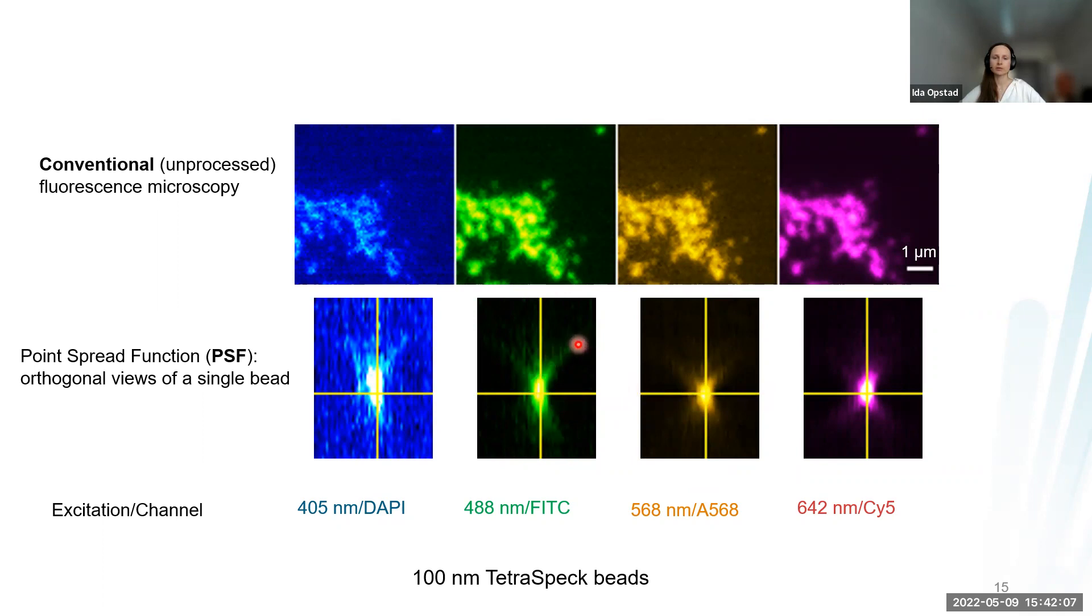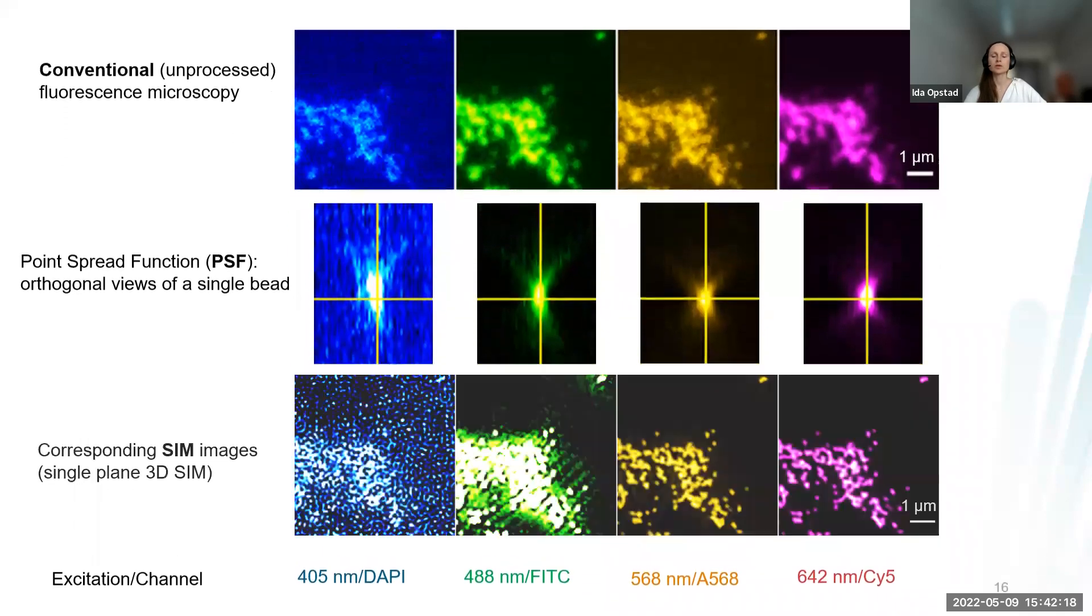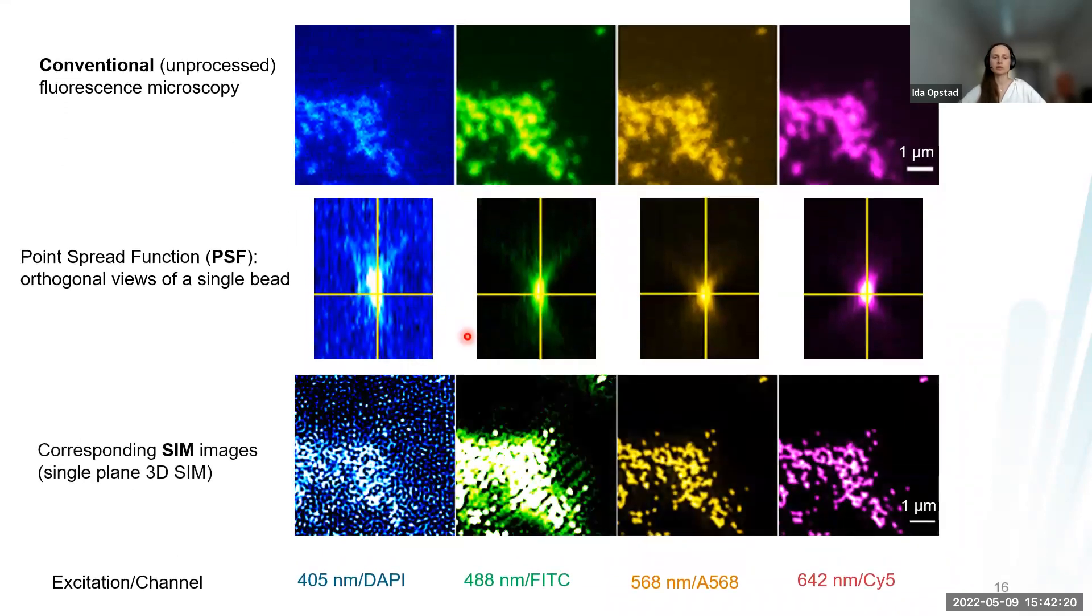This is the Z axis and this is X or Y. For green, we see it starts spreading a bit more out. For the blue channel here, it spreads even more, but also the signal to noise is really poor. What happens if you try to reconstruct something like this is we only get reconstruction artifacts. Only where the point spread function looks good will we get an actual super resolved image.